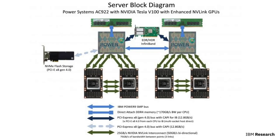The NVLink interface is a high bandwidth interface, so we can leverage that additional bandwidth to effectively hide the copy time behind the computation time on the GPU. This means we can use the GPUs more effectively, and that results in a faster training time in the end.